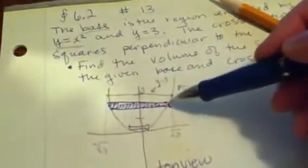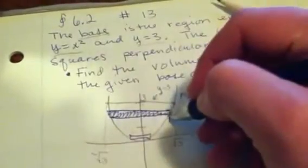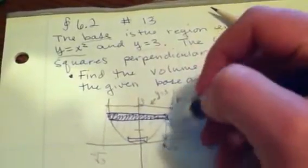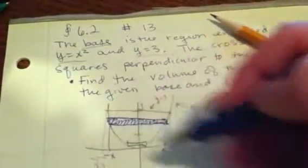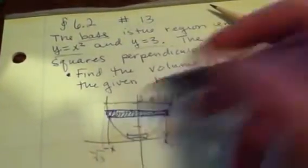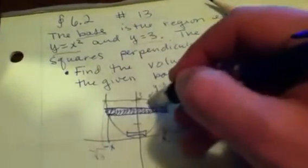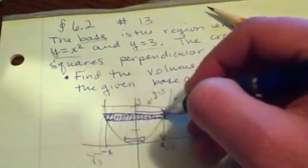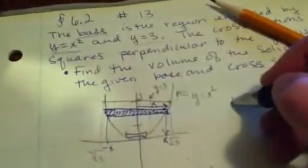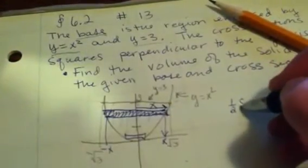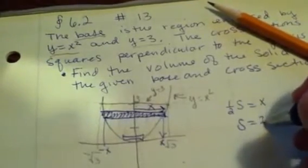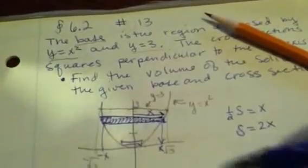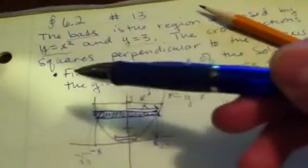Right here would be your biggest square of 3 by 3, but here this square has a length that starts at x and goes to negative x. So this length, or this height, half of it is this distance right here of x. So if one half the side of your square is equal to x, then the side of your cross-sectional square is equal to 2x.